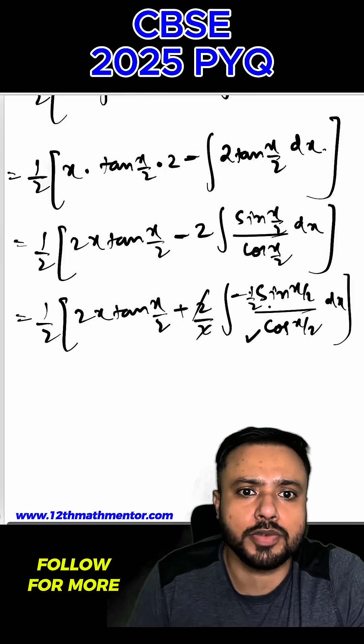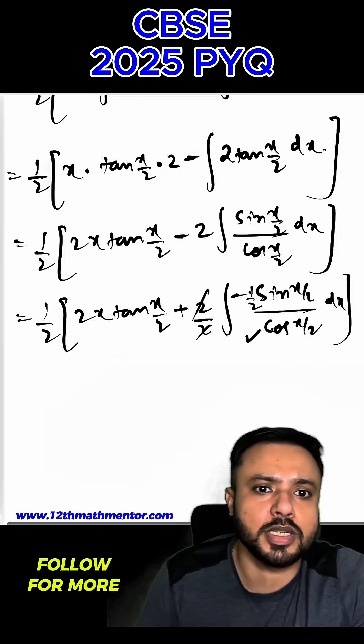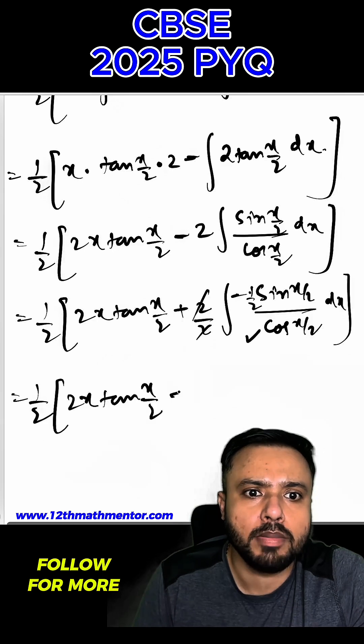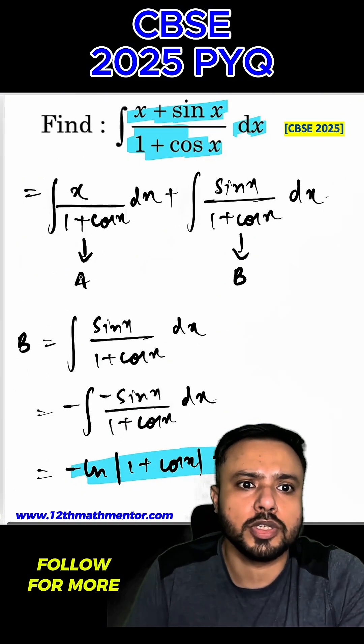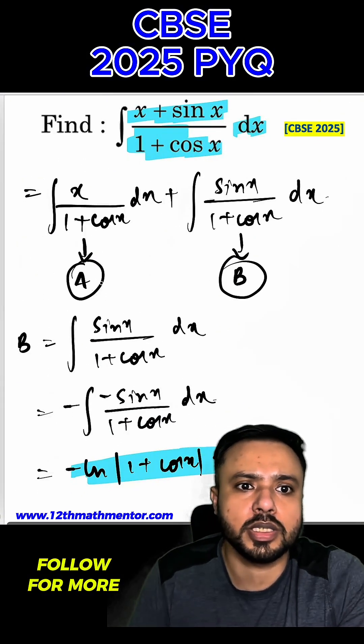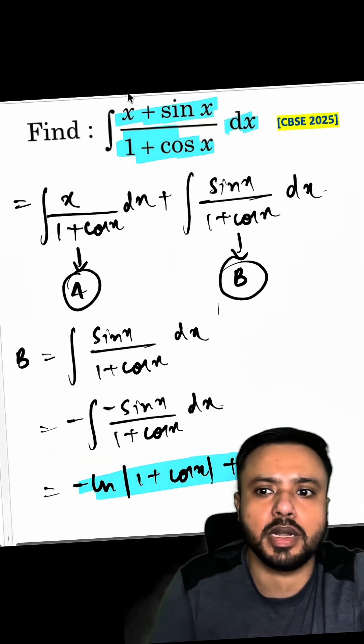Again you can see here that the derivative of cos of x by 2, which is negative 1 by 2 sin x by 2, is present here in the numerator. So it will be 1 by 2 minus ln cos of x by 2 plus c. This is the integral of A. Now this was my A and this was my B. I have solved both the integrals. I will just substitute the values here and we will get our desired answer.